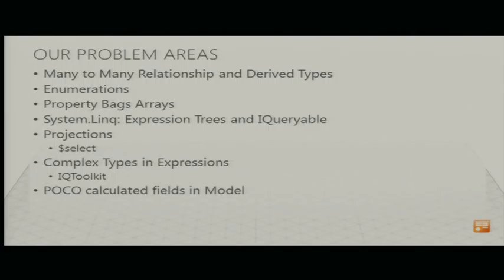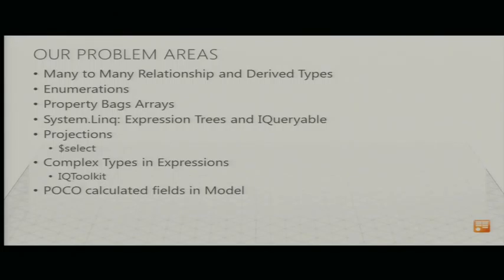We started off with the IQueryable Toolkit because we found the Entity Framework provider to be subpar. We needed code-first development, because in a team setting, drawing a picture and generating an EDMX wreaks havoc — the slightest change gets committed and pushed to the repository with no clear reason. Code-first is your best friend. We went with IQueryable Toolkit for code-first, applied a couple of user-contributed bug fixes, and got pretty far. Then we realized we couldn't put complex types into an expression tree, and we'd have to revisit or spend much more time fixing it.